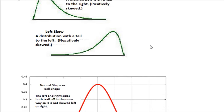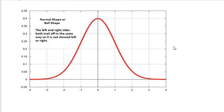But sometimes you can have a distribution like this, and this is called a normal shape or bell shape, because in this case it doesn't skew to the left or right. The left and right sides both trail off in the same way. Since it's not skewed left or right, we say this is a normal shape.